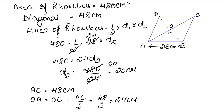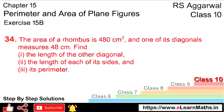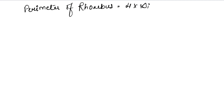Since all sides of a rhombus are equal, each side is 26 cm. We have found the other diagonal (20 cm) and each side (26 cm). Now for the perimeter: perimeter of a rhombus = 4 × side = 4 × 26.